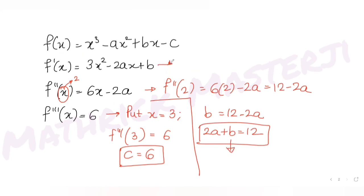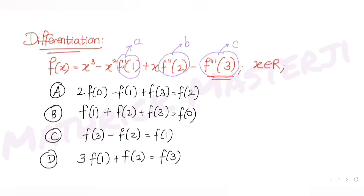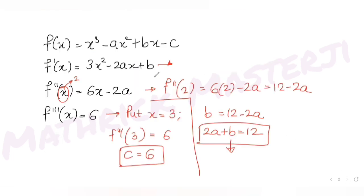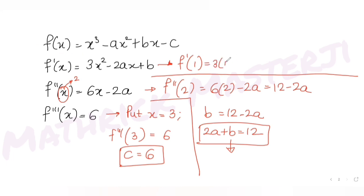Now let's find f'(1), which we set as a. Putting x = 1 in f'(x): f'(1) = 3·1² − 2a·1 + b = 3 − 2a + b.